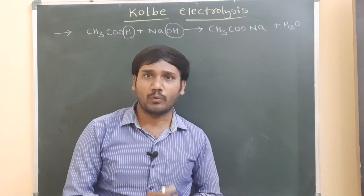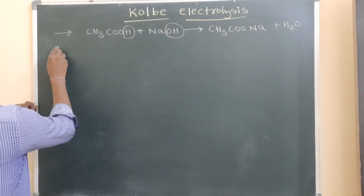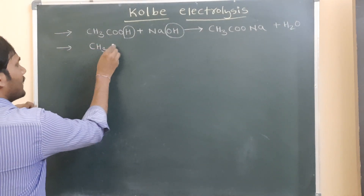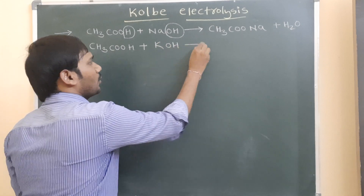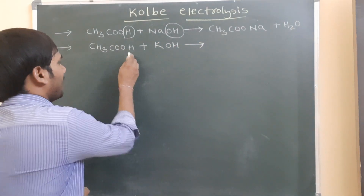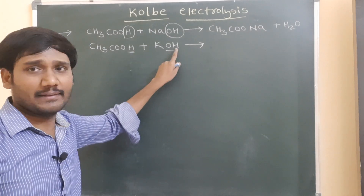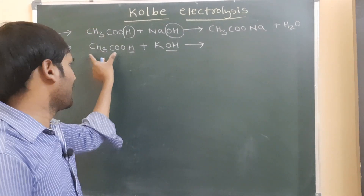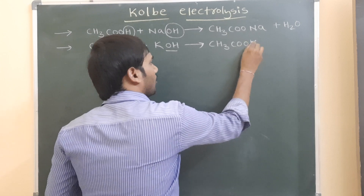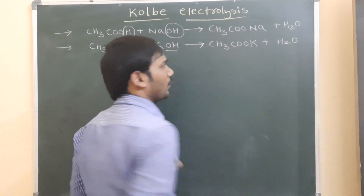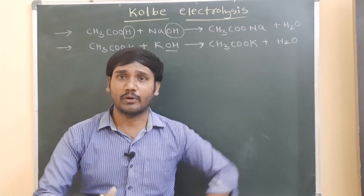This sodium salt of carboxylic acid is used to prepare alkanes. We can also use potassium salt of carboxylic acid. To prepare potassium salt, I take acetic acid and react it with potassium hydroxide. Potassium hydroxide is a base; the H+ from acetic acid and OH- from KOH combine to form water, while the acetate ion and potassium ion combine to form potassium salt of acetic acid.